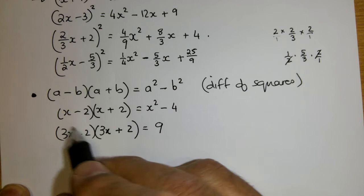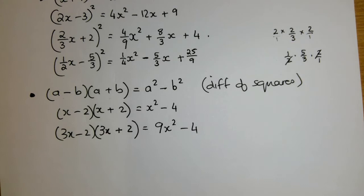The form is perfect. So the first one squared, 3 times 3, or 3 squared is 9x squared minus 2 squared, which is 4.